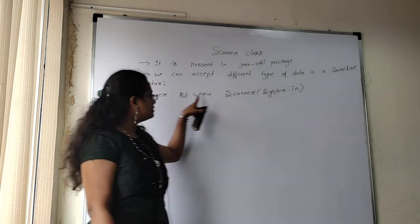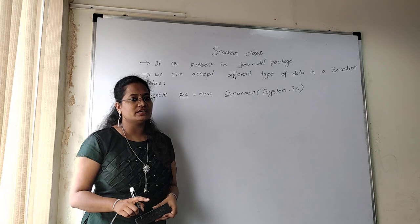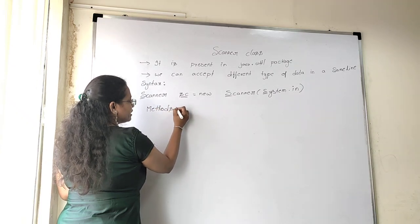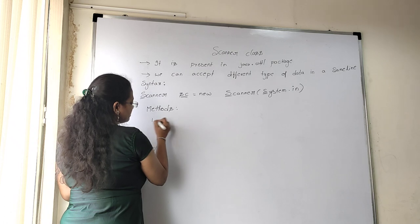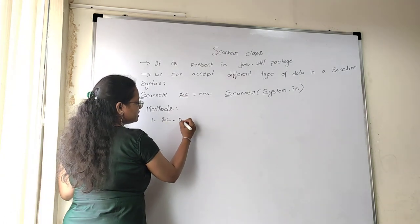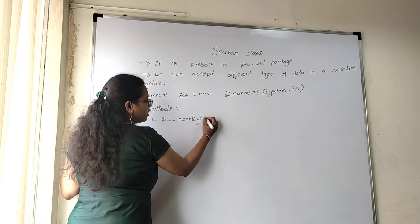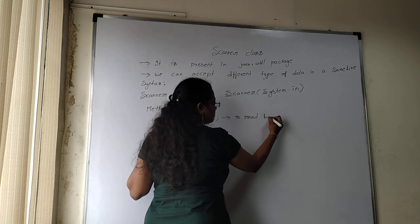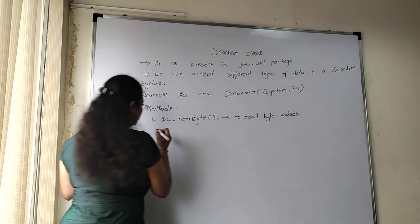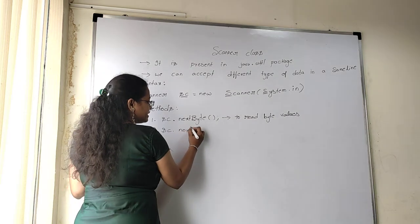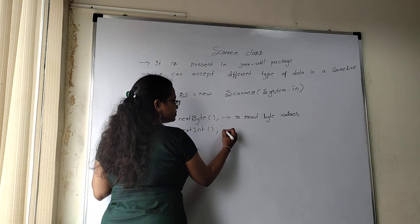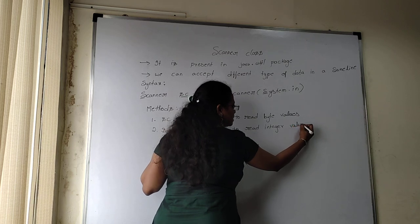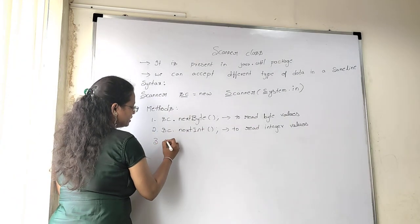Whatever data you take from the keyboard is stored in the sc object. To use the Scanner class, we need some methods. The first method is `sc.nextByte()` — to read byte values. Similarly, `sc.nextInt()` is the method used to read integer values.